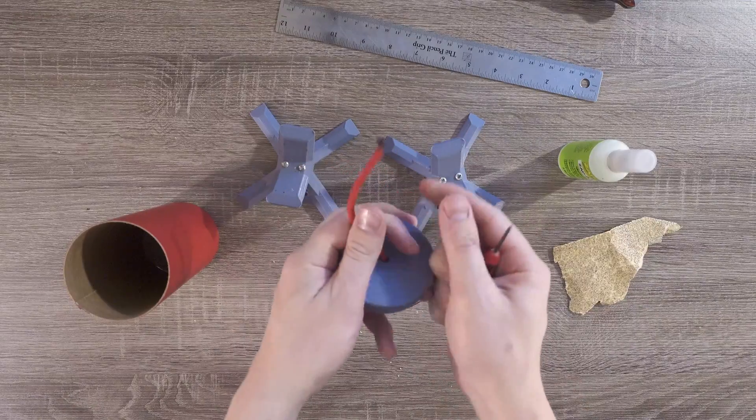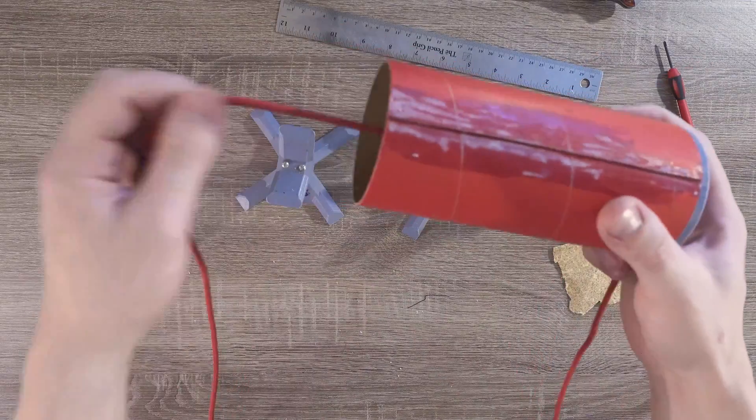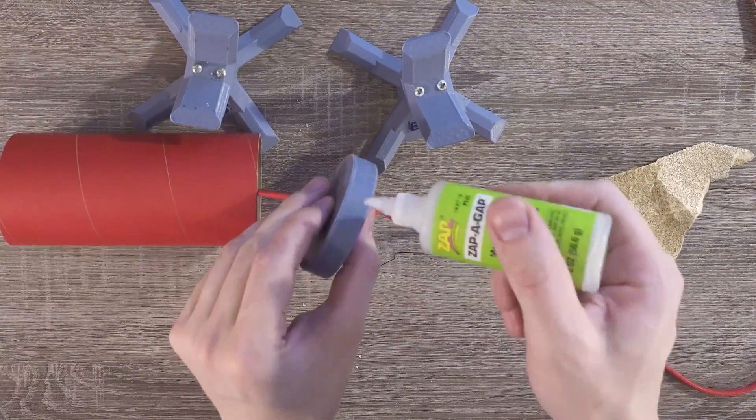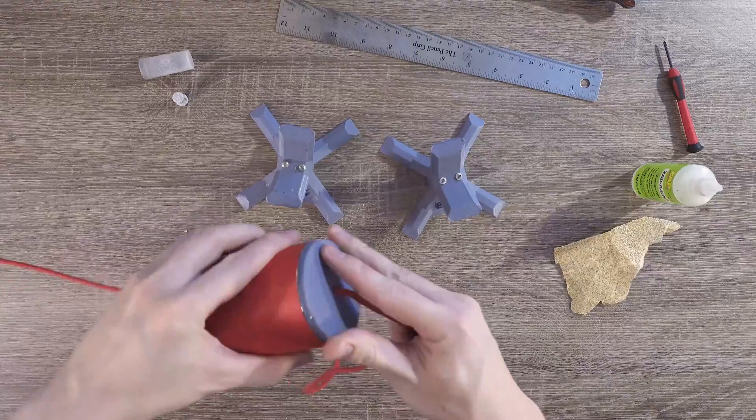Now we'll thread the shock cord through the piston bulkhead. It's okay if this isn't totally airtight, but it should be close. Then finally, we can attach the piston bulkhead to the piston using a generous amount, again, of medium superglue.